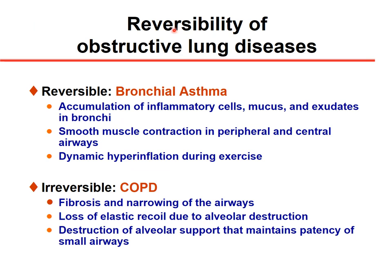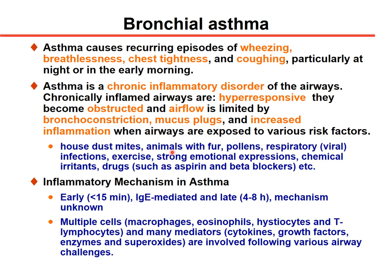The reversibility of obstructive lung diseases varies. Some obstructive lung diseases are reversible, and some are not. Reversible chronic obstructive lung disease includes bronchial asthma, where accumulation of inflammatory cells, mucus, exudates, and smooth muscle contraction in peripheral and central airways causes dynamic hyperinflation during exercise. The irreversible form includes COPD, with fibrosis and narrowing of small airways, loss of elasticity due to alveolar destruction, and destruction of alveolar support maintaining small airway patency.